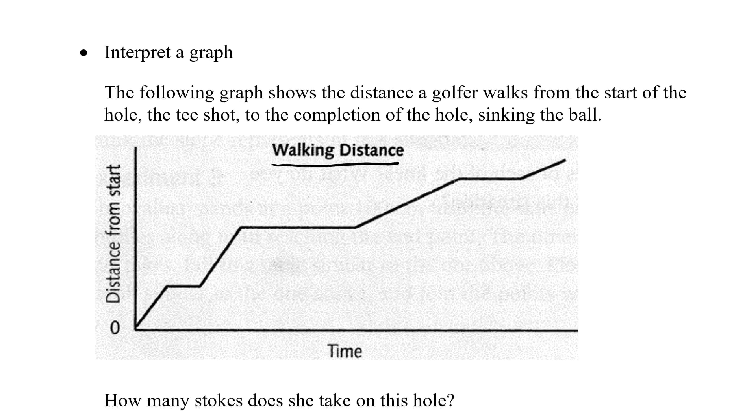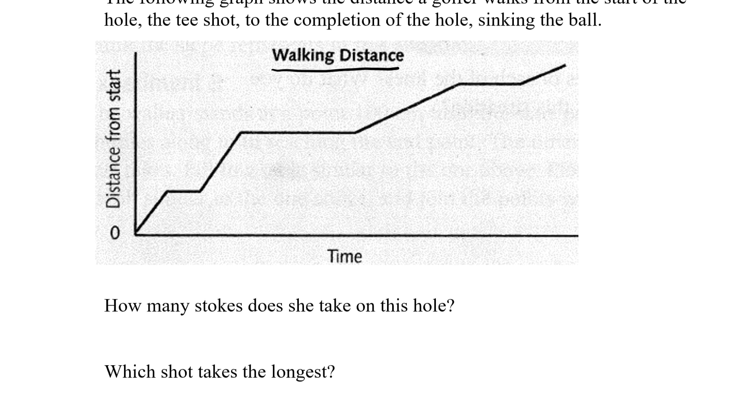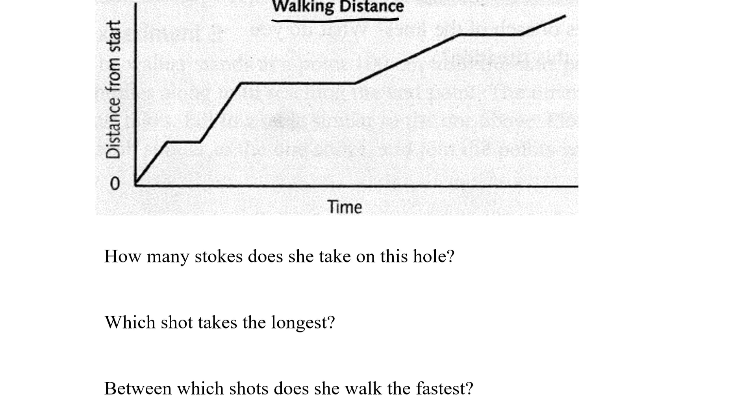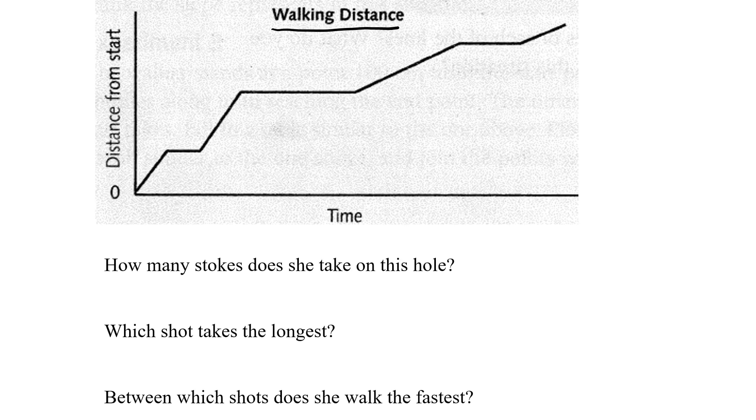So let's see if we can ask some questions based on this graph. How many strokes does she take on this hole? Remember she starts off and she hits the ball, so there's one stroke. Then she walks to her ball, she sits there, lines up her shot, and she hits it.